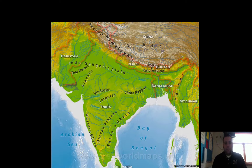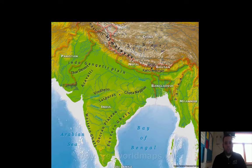A lot of the times these rivers get dried up during the dry season, and that's another unique thing about India. As with Egypt, there was a wet and dry season — there's going to be that in India as well. So let's take a look at some of where our studies are going to take us.